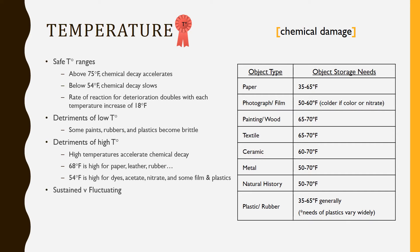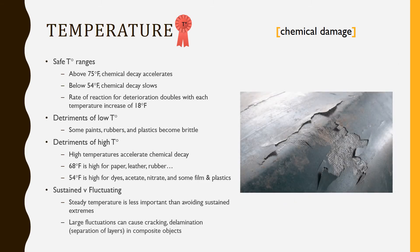When it comes to conditioning a space, temperature can be sustained — like keeping it at 72 year round — or it can fluctuate, where it might be higher in the summer and lower in the winter. Maintaining a steady temperature is less important than avoiding sustained extremes, whether those are high or low. Trying to be within or near the safe temperature range for as long as possible is preferable. Fluctuations are okay, but large swings in temperature, especially if they occur quickly, can cause cracking or delamination in composite objects, which are items that have different components that react to heat gain or loss differently.